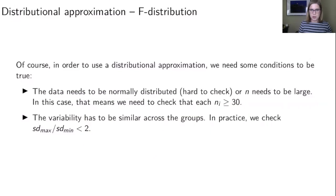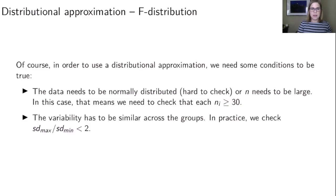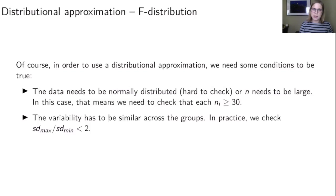If we're going to use a distributional approximation, there are conditions that need to be met. First, the data need to be normally distributed, which is hard to verify from a sample alone. Second, n needs to be large — specifically, each group's sample size n_i must be greater than or equal to 30. Third, the variability needs to be similar across groups. As a rule of thumb, we take the largest standard deviation divided by the smallest standard deviation and require that ratio to be less than two.